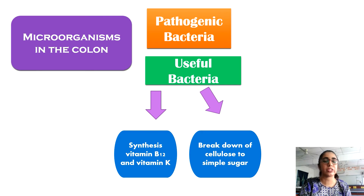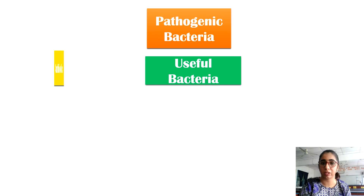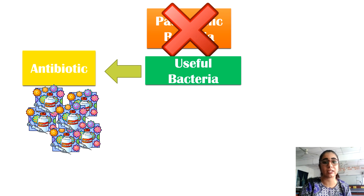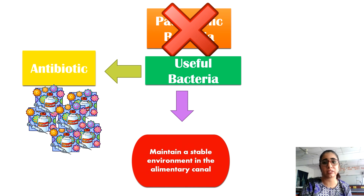These vitamins are then absorbed into the human body. The useful bacteria also produce antibiotics to control the growth of harmful bacteria. For example, Lactobacillus acidophilus secretes acidophilic antibiotics which impede the life cycle of pathogenic bacteria. Lastly, useful microorganisms are important in maintaining the balance of a stable environment in the alimentary canal.